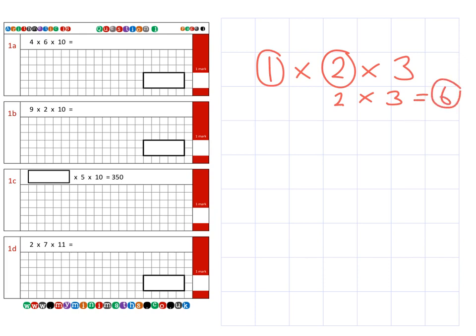If I swap that round, let's say 3 times 2 times 1. So 3 times 2 is 6. I times that by 1 and I still get an answer of 6.